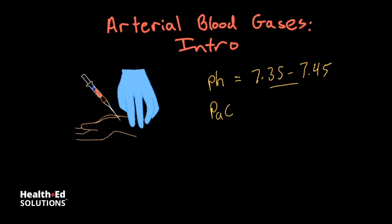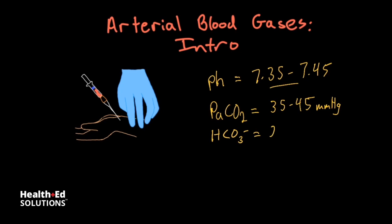The partial pressure of arterial CO2, or PaCO2, has a normal value of 35 to 45 millimeters of mercury. For those who need a refresher on partial pressures of gases, I have a video about that. The next value is bicarbonate, with a normal value of around 21 to 27 — I often see 22 to 28 used as well — in milliequivalents per liter.